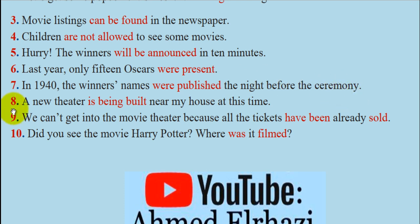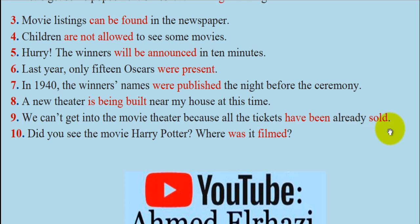Number 8: 'A new theater is being built near my house at this time' — present continuous passive, like 'right now.' Number 9: 'We can't get into the movie theater because all the tickets have been already sold' — present perfect passive. Note: 'already' goes between the auxiliary and main verb; 'have been already sold' is the most grammatically precise placement.